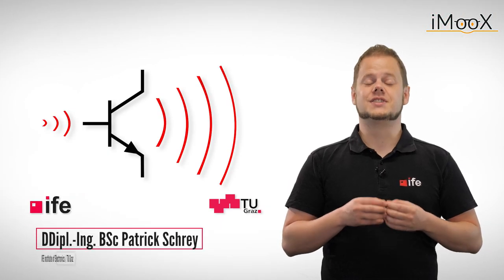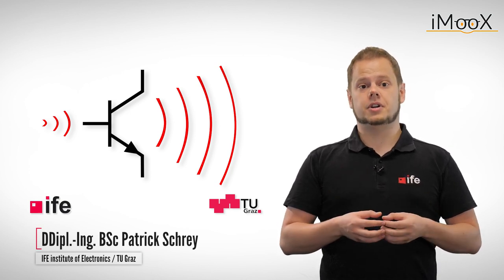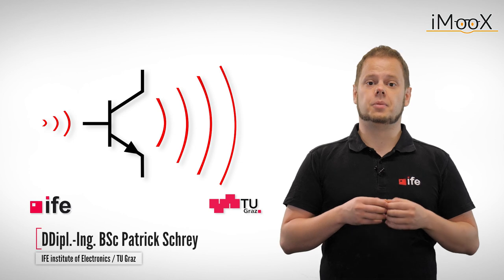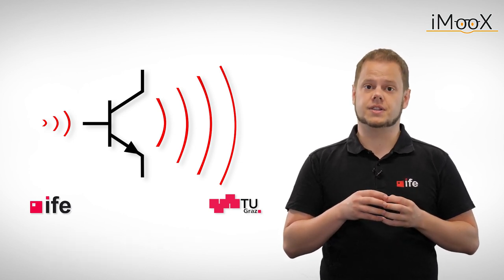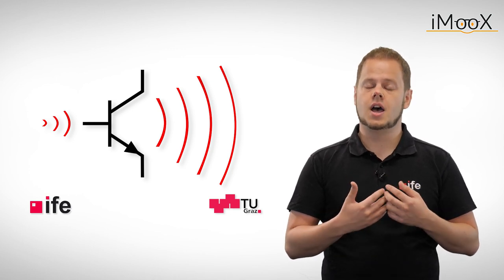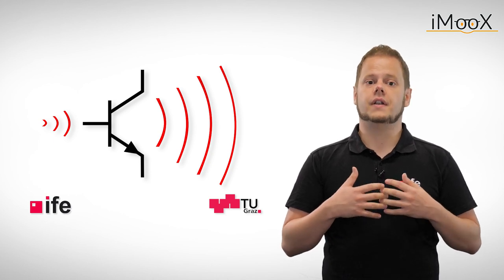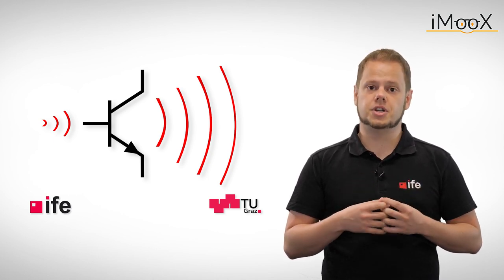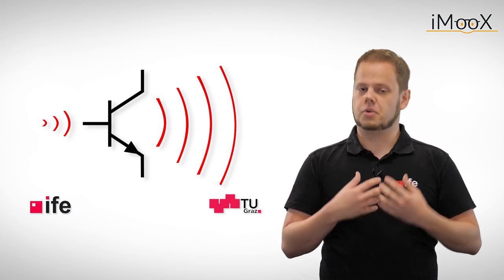The operational amplifier is the Swiss army knife of analog circuit design. Named for the mathematical operations they are able to implement, operational amplifiers are an essential part in many different applications, like power supplies, sensor interfaces, and data transmission. But before we dive headfirst into our first example on how to realize mathematical operations with electronics, we take a closer look at the basics of operational amplifiers.